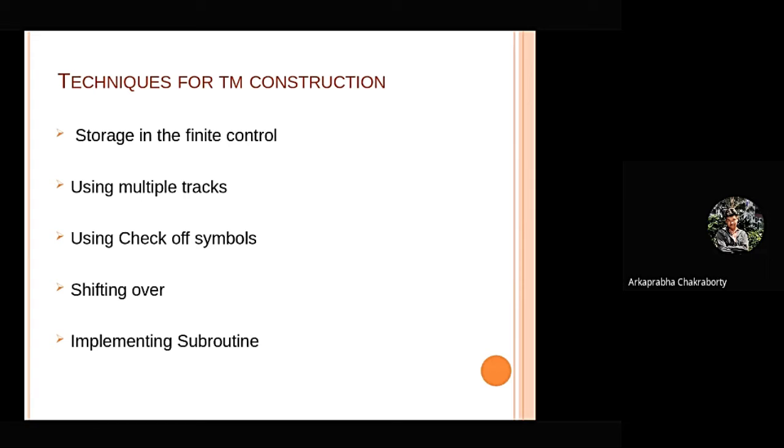The techniques for construction of a Turing machine involve storage in the finite control, using multiple tracks, using check-off symbols, shifting over and implementing a subroutine.